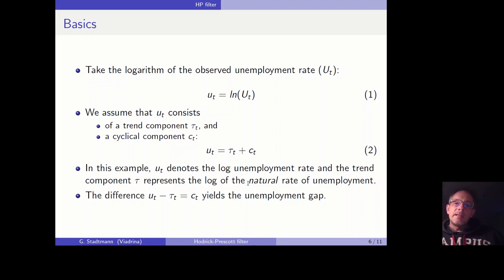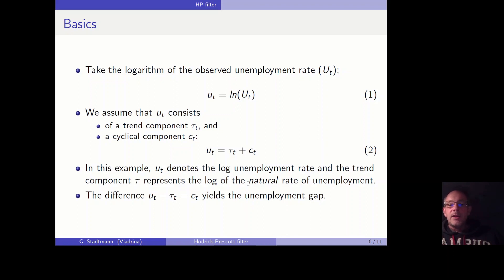We can disentangle the overall time series into two components: a trend component and a cyclical component. In this example, U_t denotes the log unemployment rate, the trend component tau represents the log of the natural rate of unemployment, and the difference between the realized unemployment and the natural rate — the variable C — is the unemployment gap.